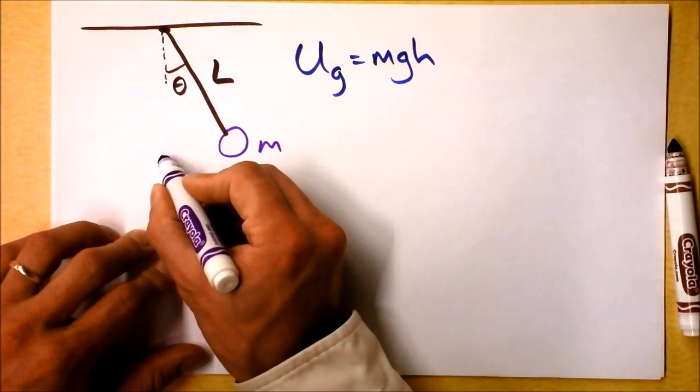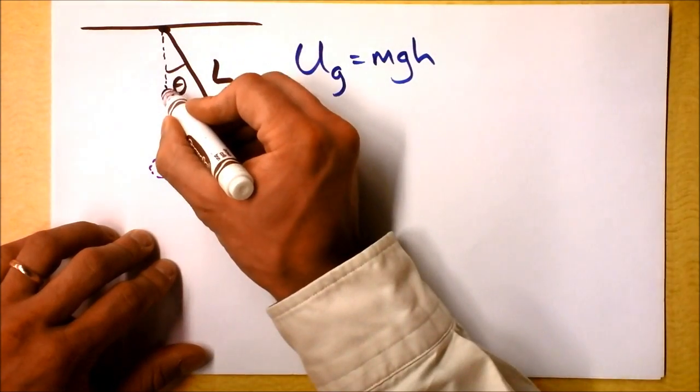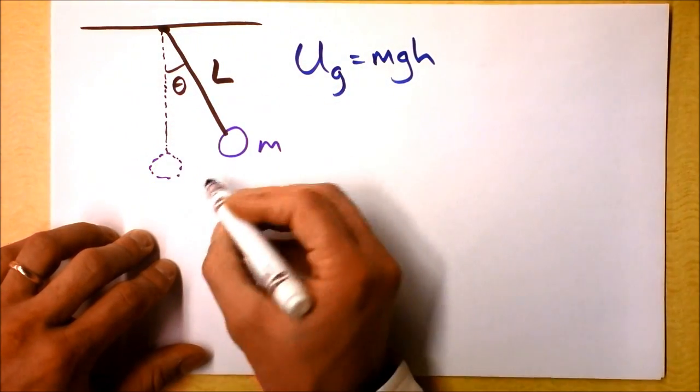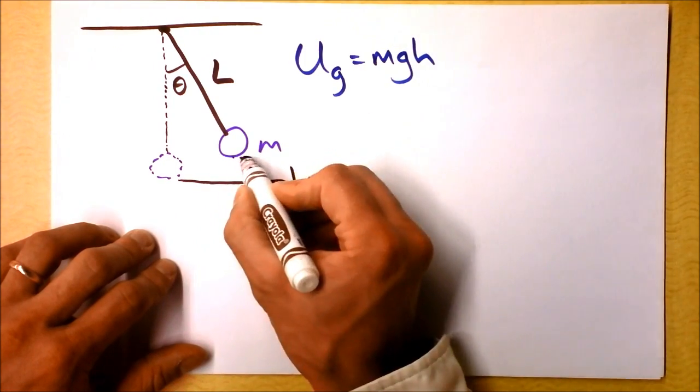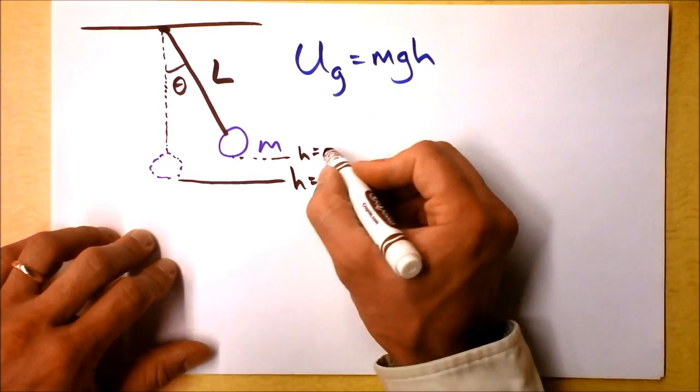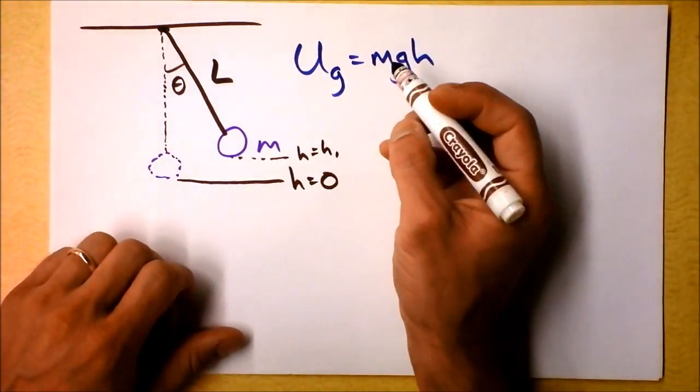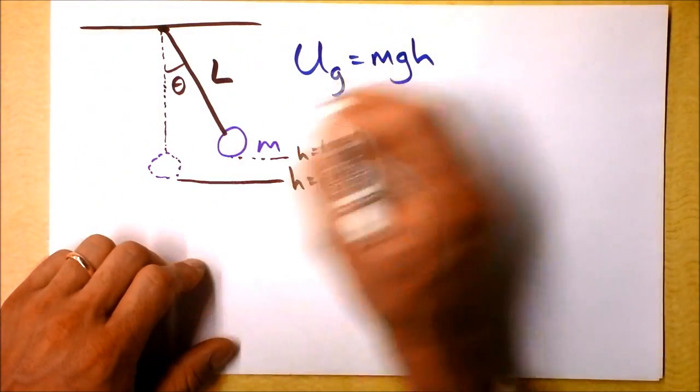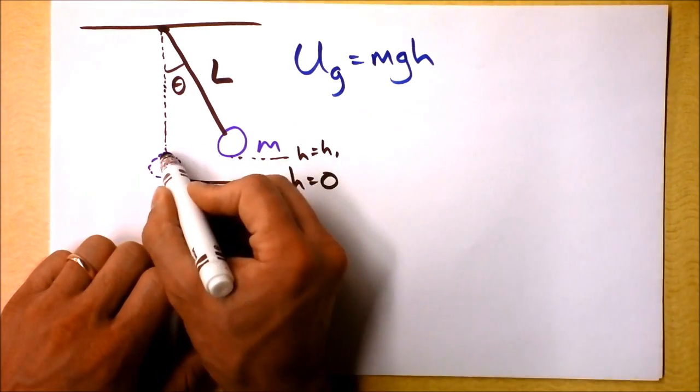It might be reasonable to call the zero point right down here. In that case, we can continue this dotted line and say that this is a height of zero, and this is a height that we're going to call h. We're trying to figure out what h is, and it depends on the angle, it's just a little bit of trigonometry here.